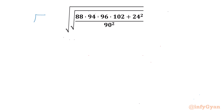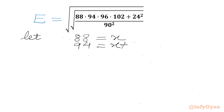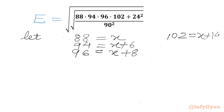Let us get started by considering this expression equal to e first. Now I will consider 88, so let us say 88 equal to x. So I can write 94 will be x plus 6, 96 we can write x plus 8, 102 we can write x plus 14, and the denominator has 90 so 90 can be written as x plus 2.